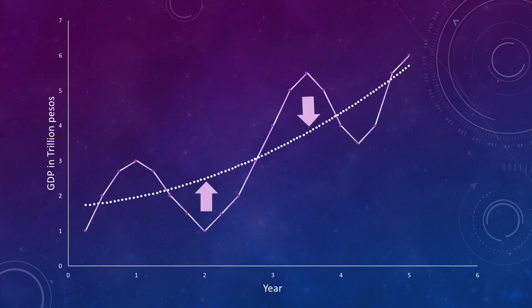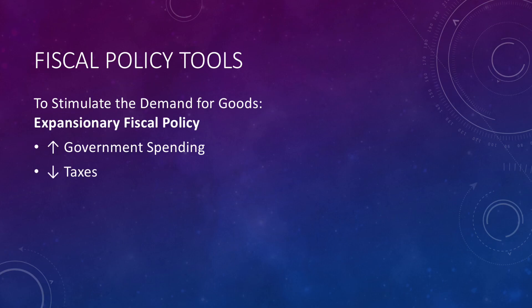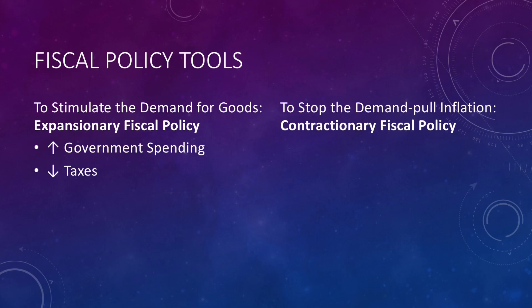The fiscal policy tools are as follows. To stimulate demand for goods, an expansionary fiscal policy is necessary, accomplished through increased government spending or decreased taxes. If we want to stop demand-pull inflation, a contractionary fiscal policy would be prescribed.